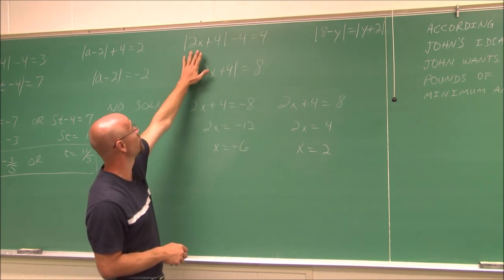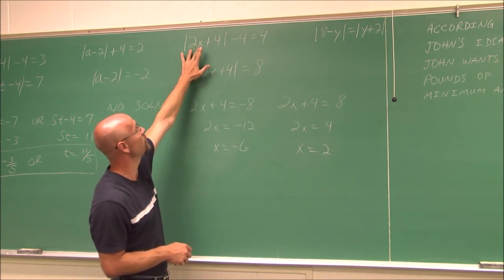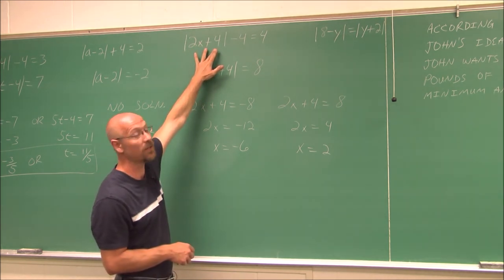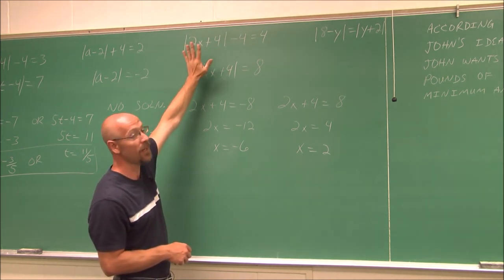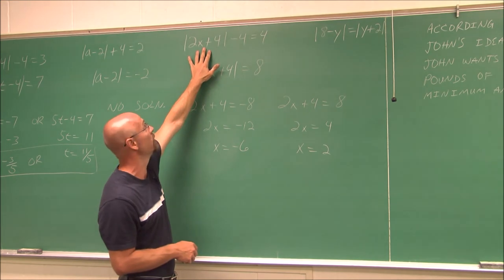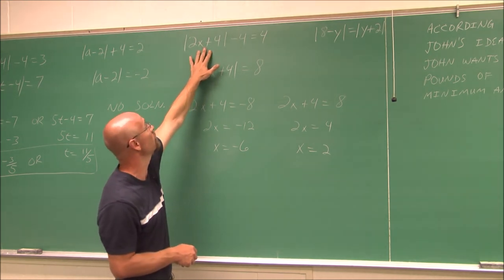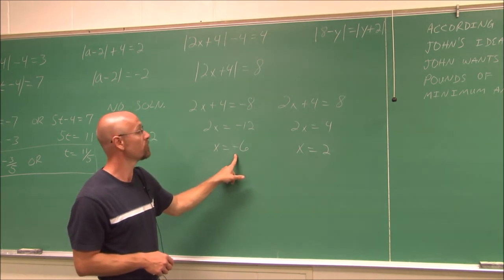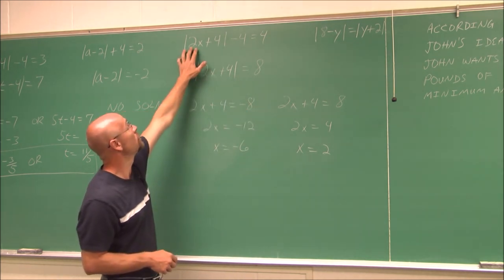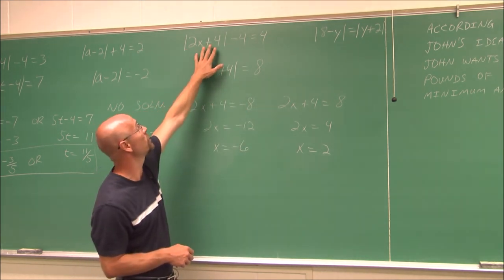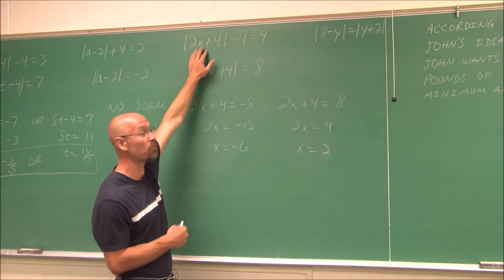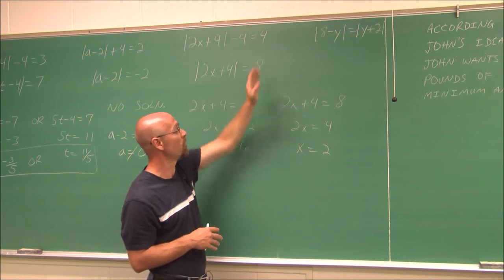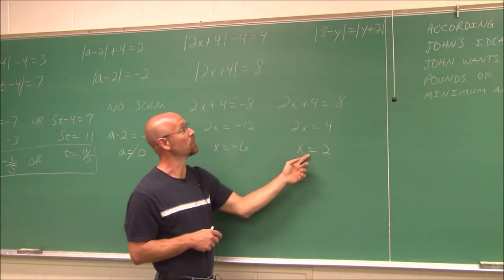Checking x equals negative 6: 2 times negative 6 is negative 12, plus 4 is negative 8, and the absolute value of negative 8 is 8, minus 4 is 4 — true. Checking x equals 2: 2 times 2 is 4, plus 4 is 8, and the absolute value of positive 8 is 8, minus 4 is 4 — also a true statement.